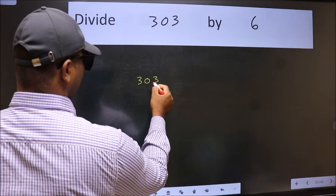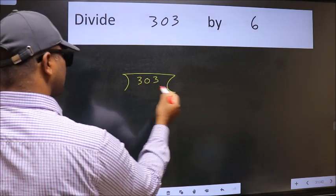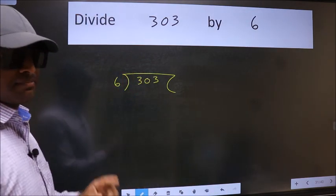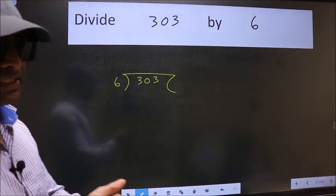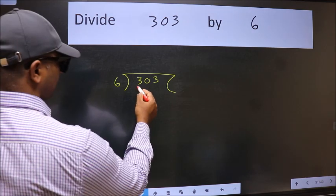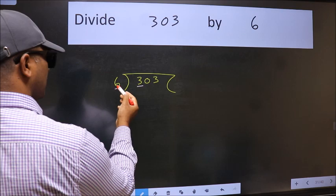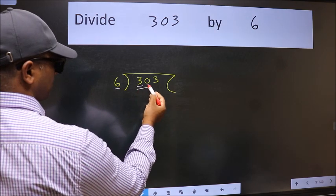303 and 6 here. This is your step 1. Next, here we have 3 and here 6. 3 is smaller than 6, so take 2 numbers, 30.